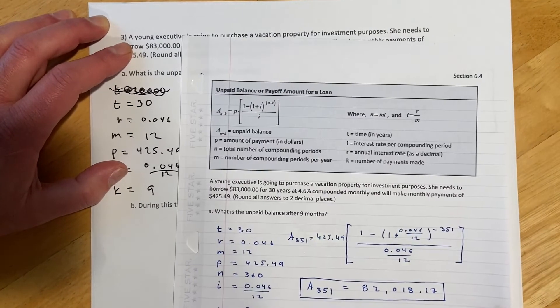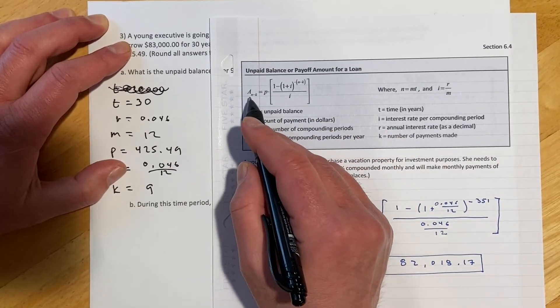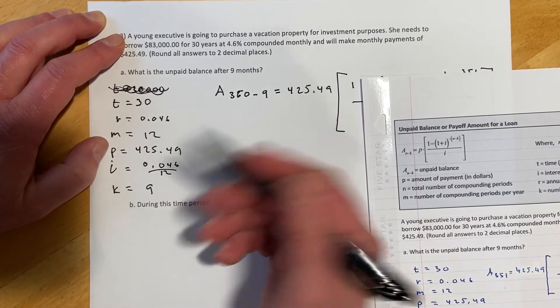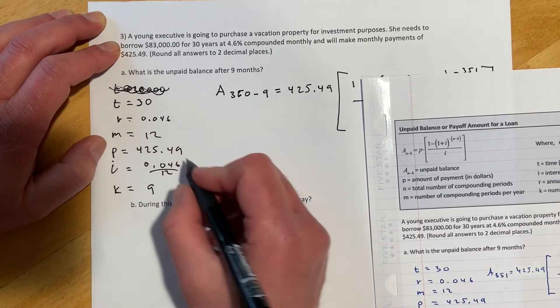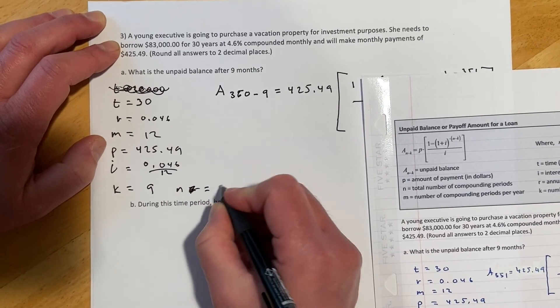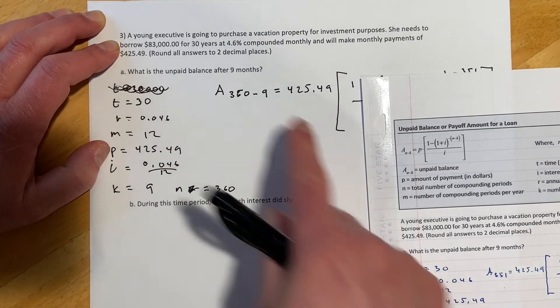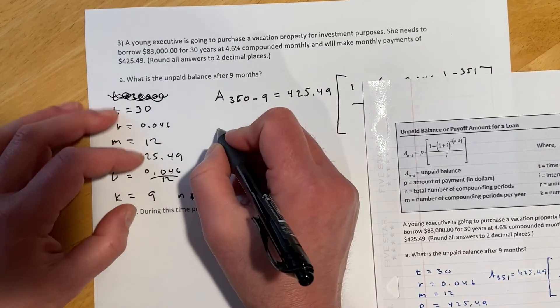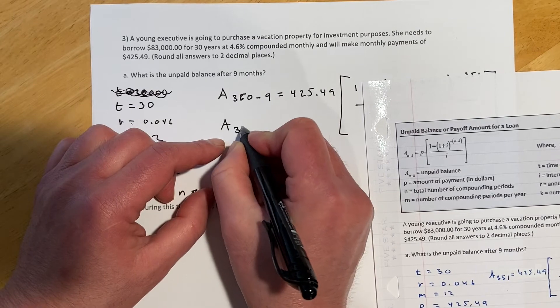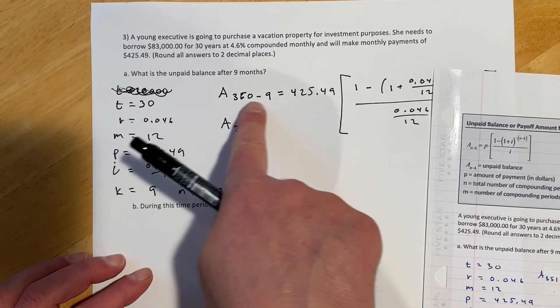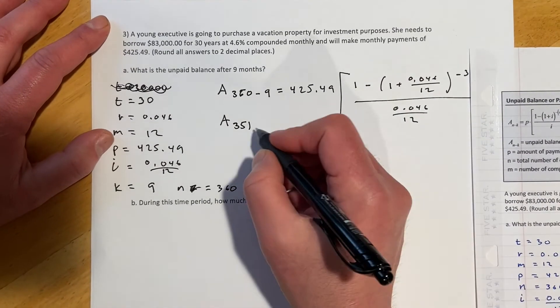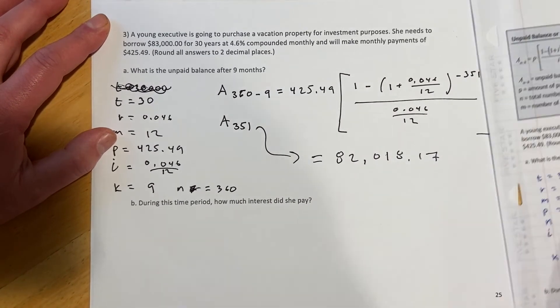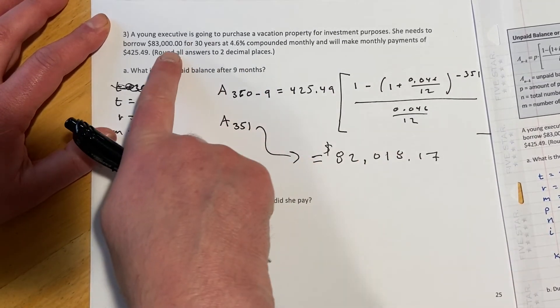Okay, so here this is with everything filled in. I'll take a second and explain this A N minus K deal. So remember, N is the total number of payments. So like on a 30-year mortgage, that's going to be 360 payments, which I don't think I actually found N when I did this. No, I should have found N. So N should have equaled 360. And so the N minus K in this, what it's doing is it's saying we're going to take 360 payments on the whole loan and then take away nine payments. So we're finding the amount when there are 351 payments left. That's what that little chunk of math is saying. And then the rest of it is all just throw it in a calculator. And so this came out to $82,018.17. So that is how much money she still owes on the $83,000.